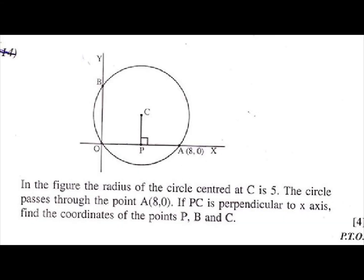14th question. In the figure, the radius of the circle centered at C is 5. The circle passes through the point A(8,0). If PC is perpendicular to x-axis, find the coordinates of the points P, B and C.